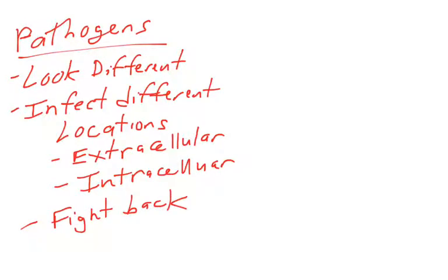The other thing the immune system is going to have to do is fight back against these pathogens. It's going to have to be able to stop them from reproducing, kill them and remove them from the body, and prevent them from continuing their reproductive cycle. So the immune system has got to be complicated because it's got to be able to attack the pathogens as well. And each pathogen — a virus or a bacteria — they might have different weapons that are used against them.